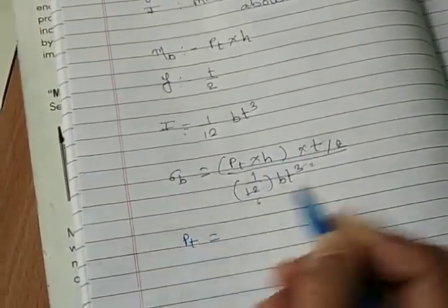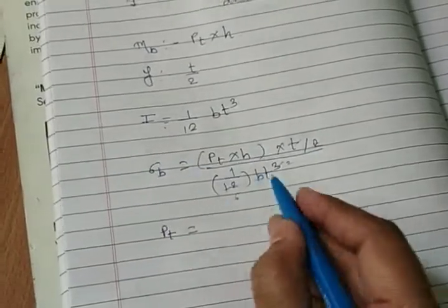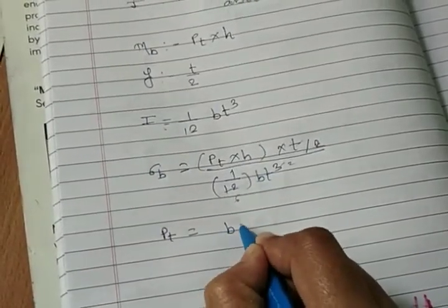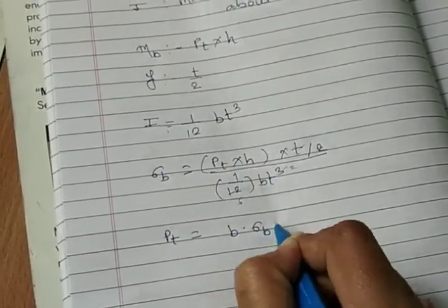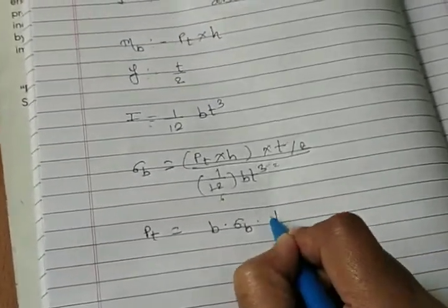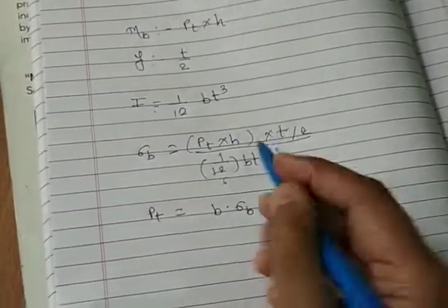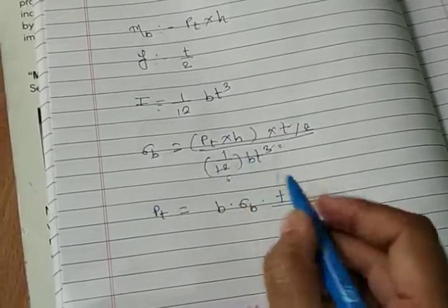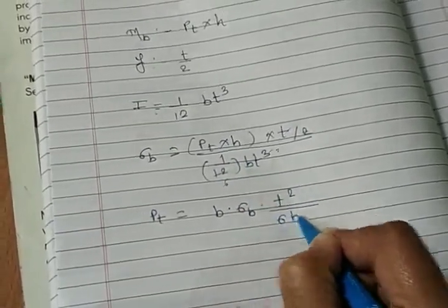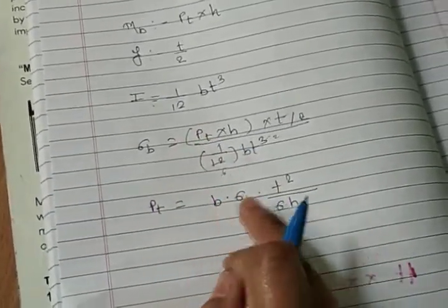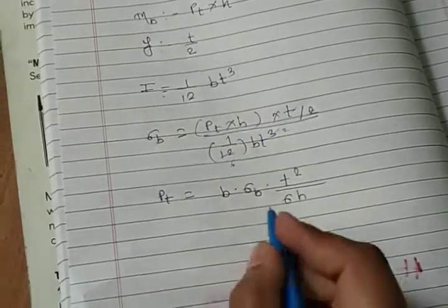Let's rearrange this equation. So we get pt is equal to b into sigma b into t square divided by 6 h. So pt is equal to b sigma b t square divided by 6 h.